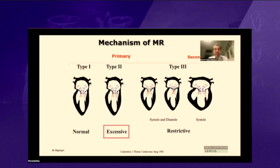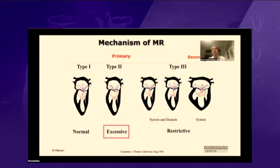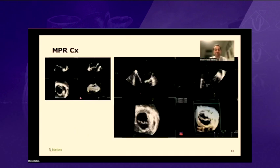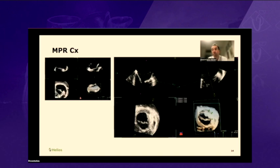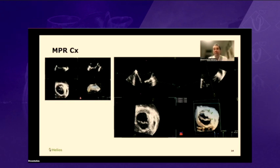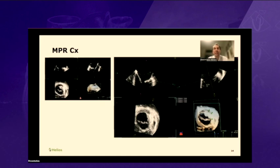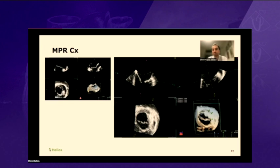Looking at the mechanism: the case is excessive leaflet motion affecting the valve in an asymmetric way. We look at the circumflex to tell the surgeon how far away it is from the annulus. I did it with MPR and consistently got 5 millimeters. When surgeons hear it's more than 5 millimeters, they feel more relaxed placing stitches. When it's less, they may be more cautious, but I'm not sure it really changes their practice — it's a measurement we always provide.